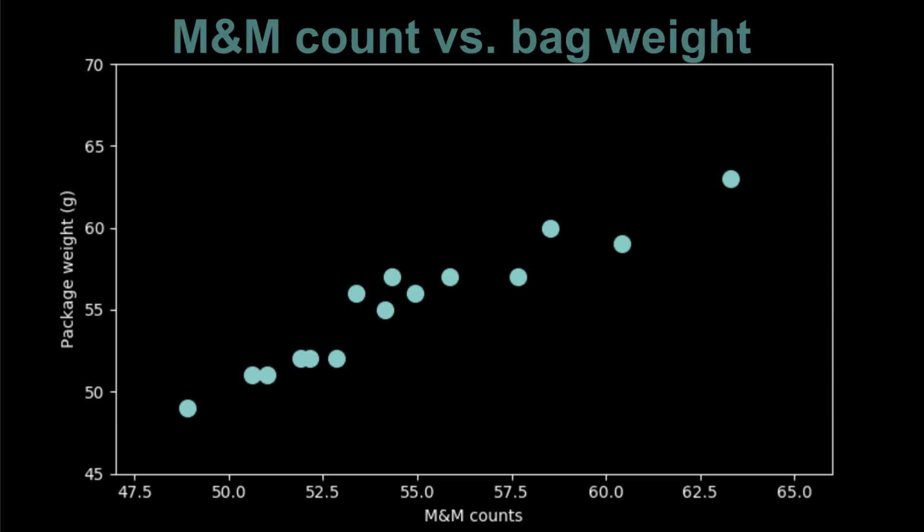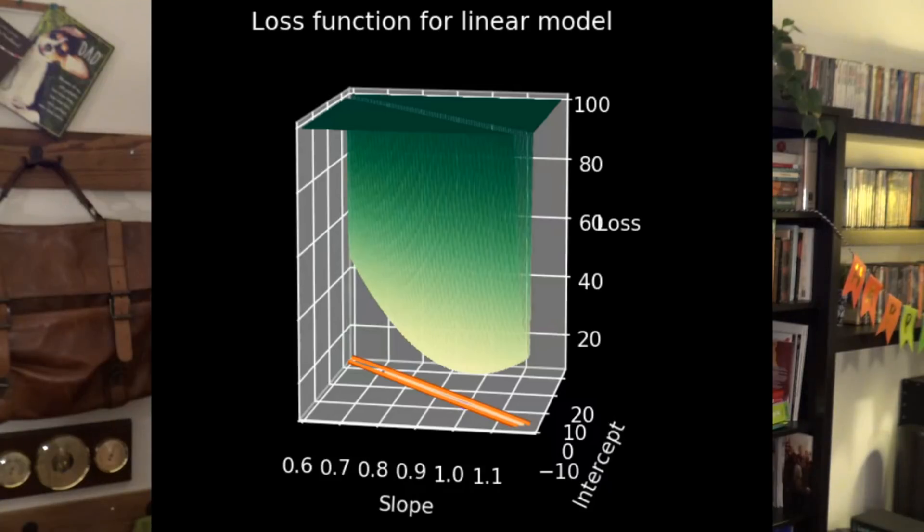However, we'll ignore that analytic solution for our straight line for now, so that we can play with two parameter optimization. We have the luxury, once again, of being able to do an exhaustive search. This gives us a bird's eye view of how the loss function varies across the parameter space.